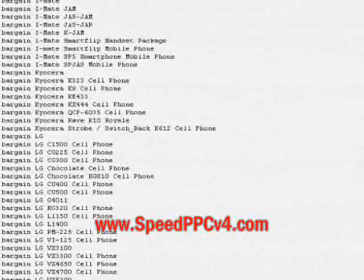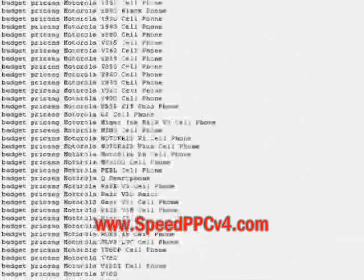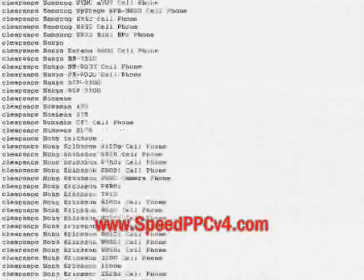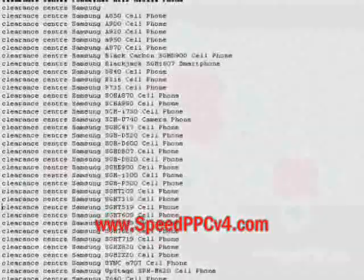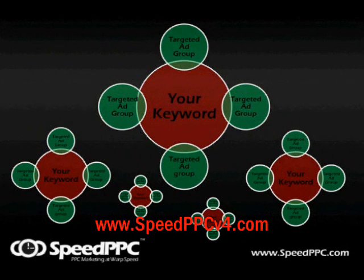Speed PPC does this by working like a dragnet, capitalising on the billions of highly targeted yet less popular keywords. The secret to its success is Speed PPC's ability to create ad groups that are 100% focused and relevant to the original keyword, no matter how many keywords you feed into the system.